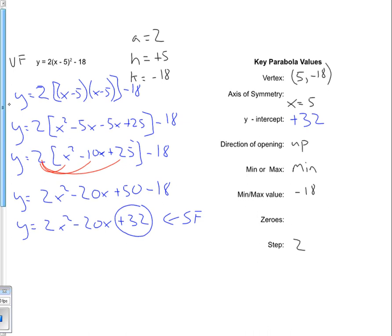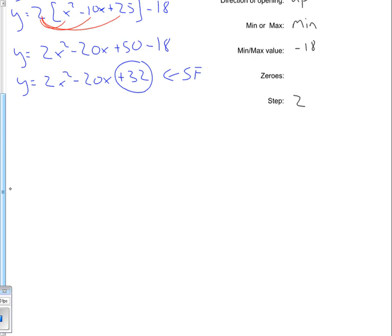But we still need to get our zeros, and we haven't done that yet. So now what we're going to do is we're going to convert from standard form into factored form. So if I want to convert this into factored form, then what I'm going to do is I'm going to take my original equation of 2x squared minus 20x plus 32.